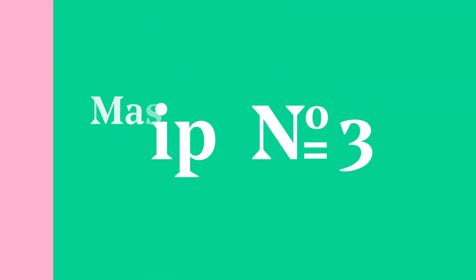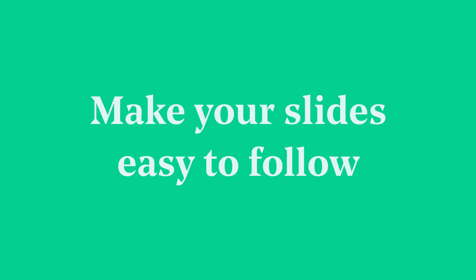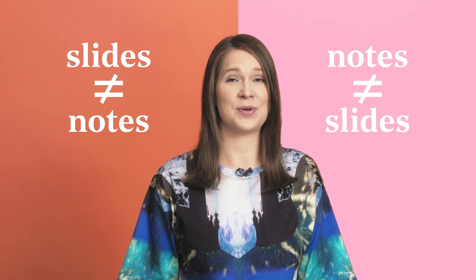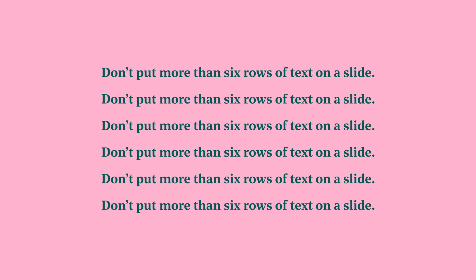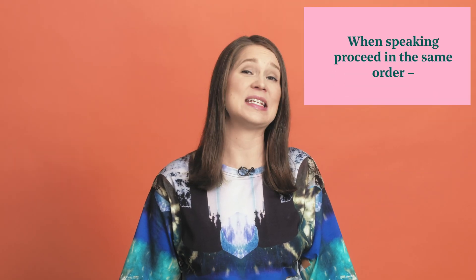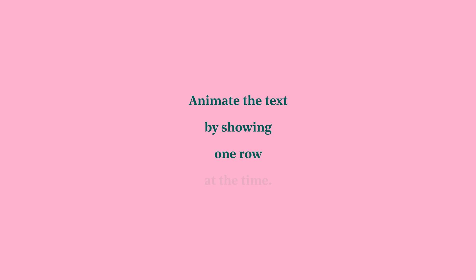Tip number three: make your slides easy to follow. Your slides are not the same thing as your notes — they are there for the audience, not for you. So don't put more than six rows of text on a slide. When speaking, proceed in the same order as your slides. Animate the text by showing one row at a time.